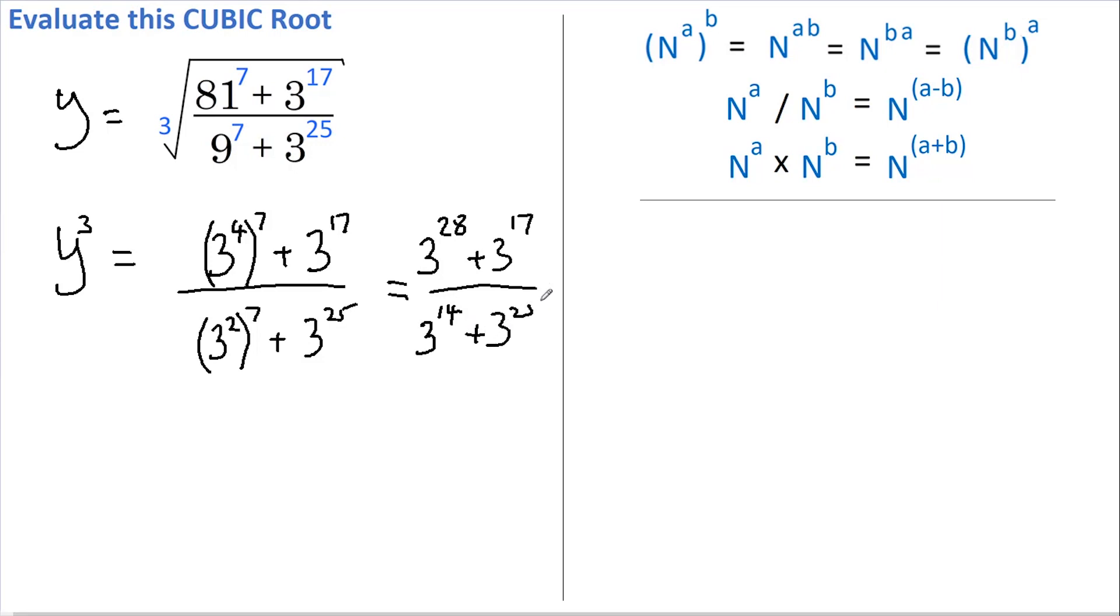I'm now going to factorize the top and the bottom by pulling out 3 to the highest power that I can, and that's 3 to the 17 on the top and 3 to the 14 on the bottom. So we get 3 to the 17 multiplied by 3 to the 11 plus 1, divided by 3 to the 14 multiplied by 1 plus 3 to the 11.